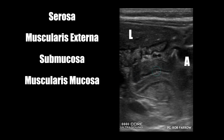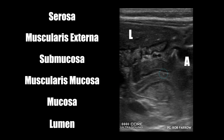Below the submucosa, you have the muscularis mucosa, which is typically hypoechoic, followed by a more hyperechoic mucosal layer. The final structure is the lumen of the pylorus, or the canal. Typically it's an open patent structure that has peristalsis going through. However, in a patient that has pyloric stenosis, the canal is obliterated, but this is the position of the canal to make the measurement.